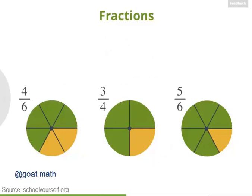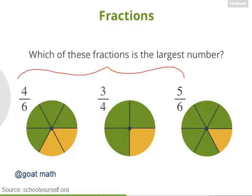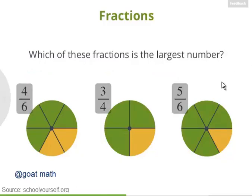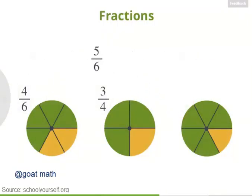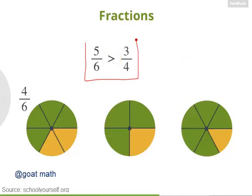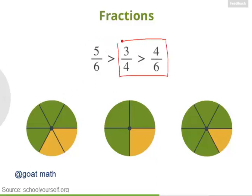Just like saying that certain numbers are bigger or smaller, you can also say that certain fractions are bigger or smaller. Which of these fractions is the largest — in other words, which represents the biggest chunk of a dot? 5 sixths is the largest. It's larger than 3 fourths, and you can write that using the greater than symbol. So 5 sixths is greater than 3 fourths, and similarly, 3 fourths is greater than 4 sixths.